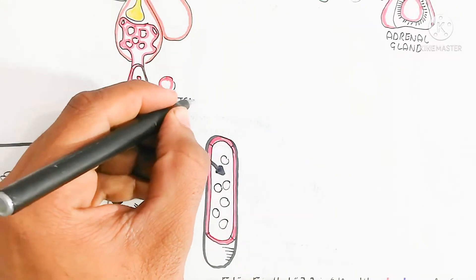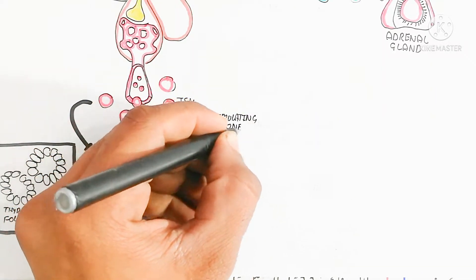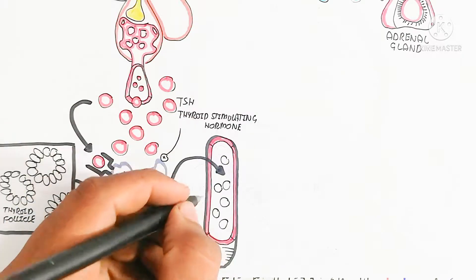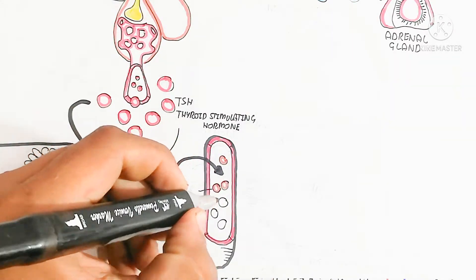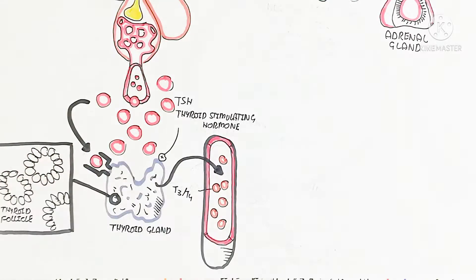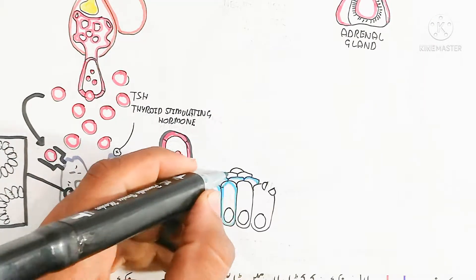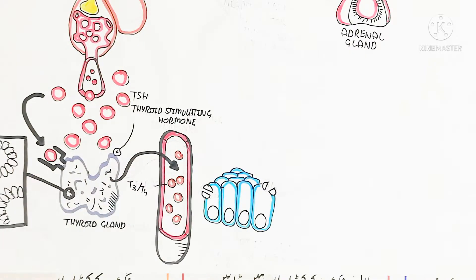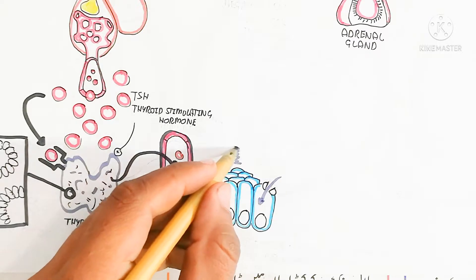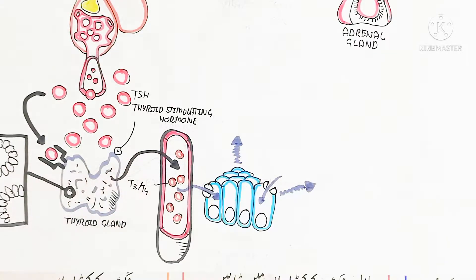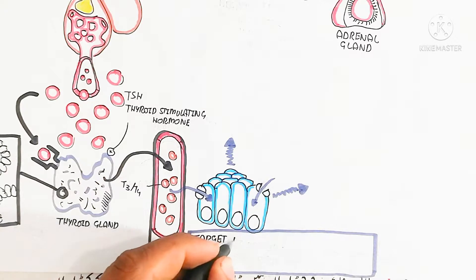T3 and T4 enter target cells directly through T3 and T4 transporters. In this way, the target tissue produces metabolic heat. The target tissue raises body temperature and increases the basal metabolic rate of body cells, due to molecular effects we will discuss.